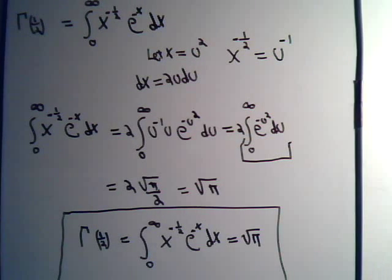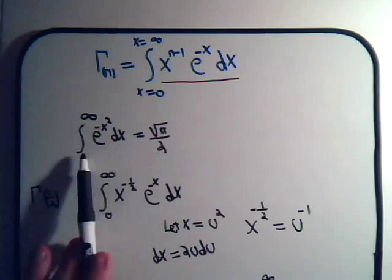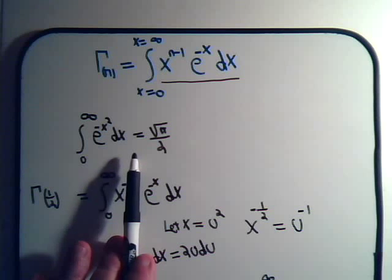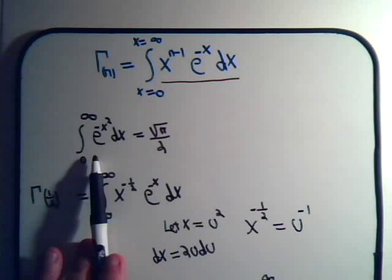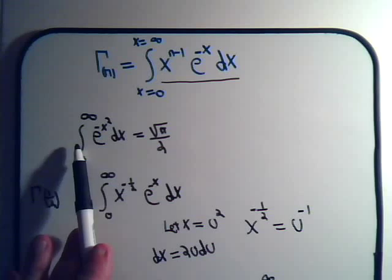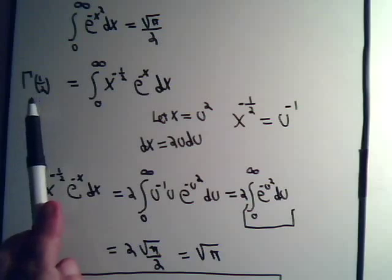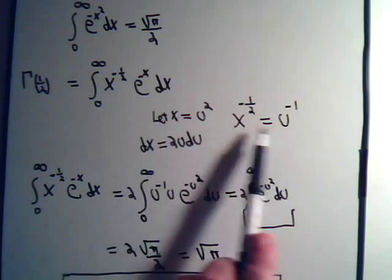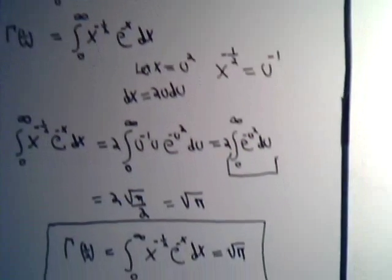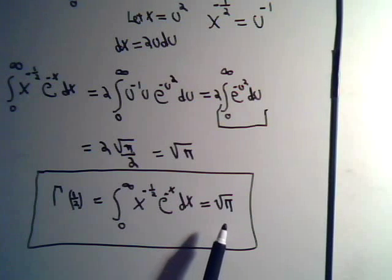It was kind of a long road in getting there. First, in the last video, we had to work with this integral. In order to get this expression, we had to consider the square of that integral, and transform it into polar coordinates. Finally, we could solve the square of the integral, then take the square root to get this integral. Once we had this integral, we could work with this one by using this rather tricky substitution, and finally declare that the gamma function of one half is equal to the square root of pi.